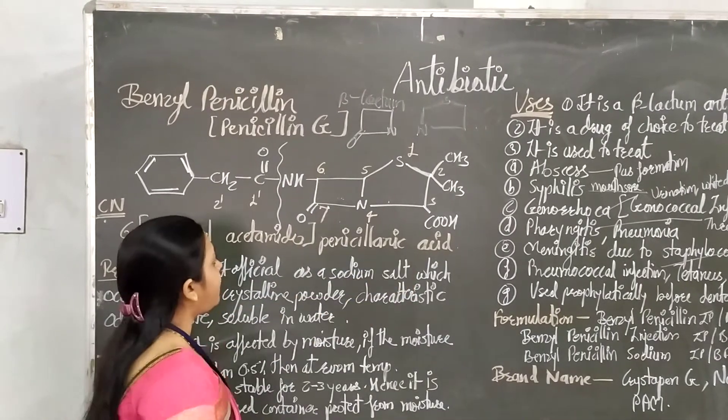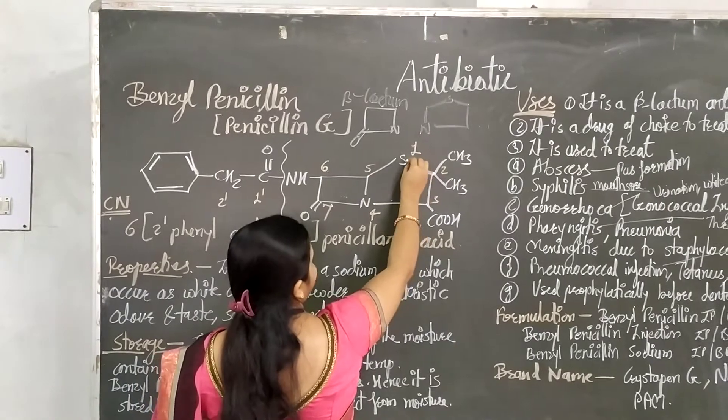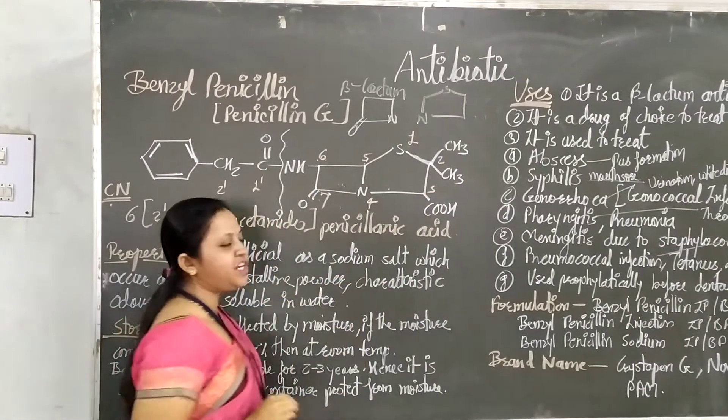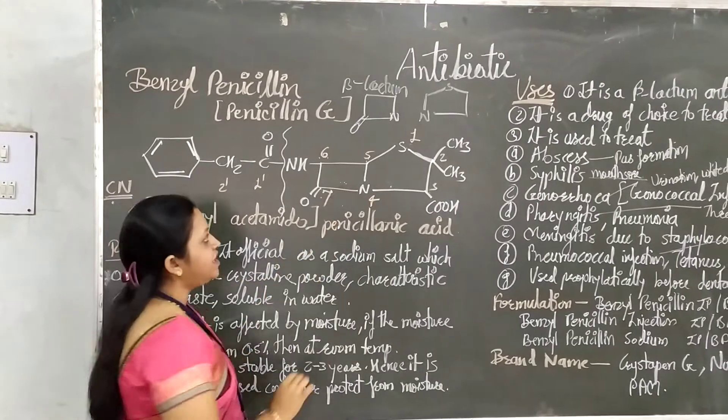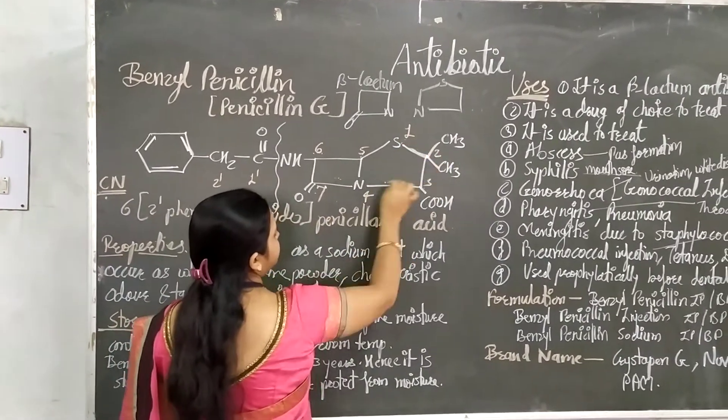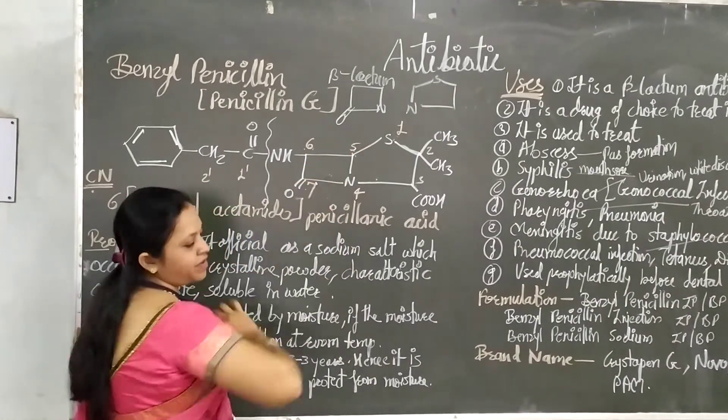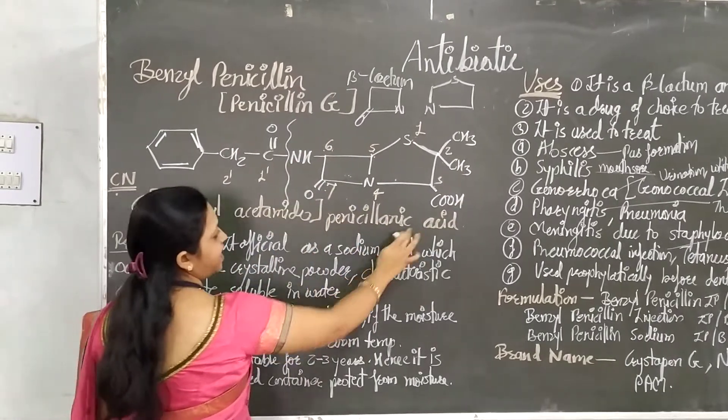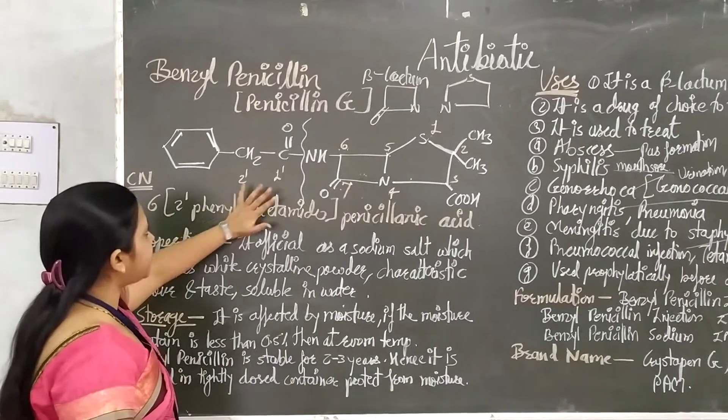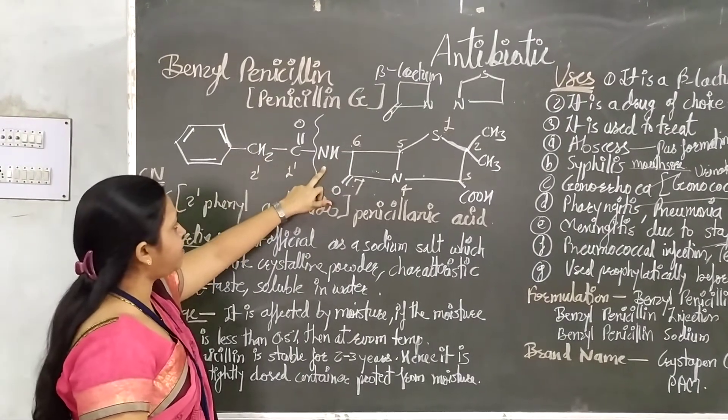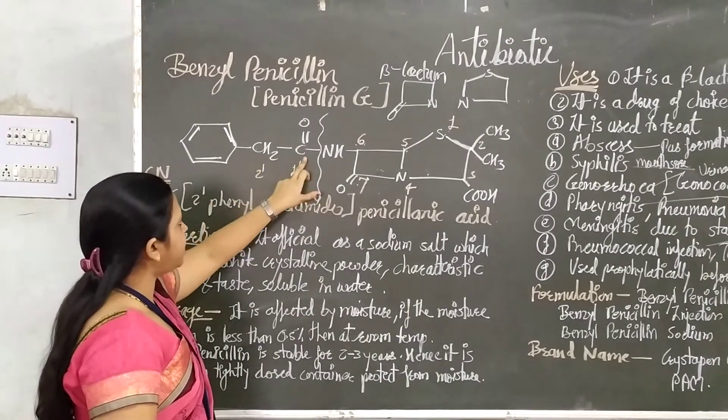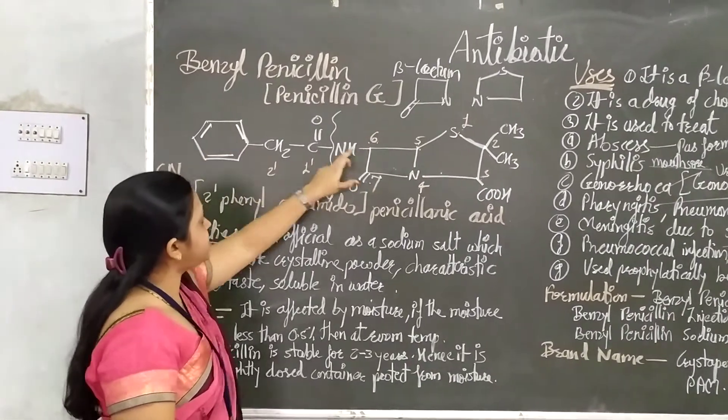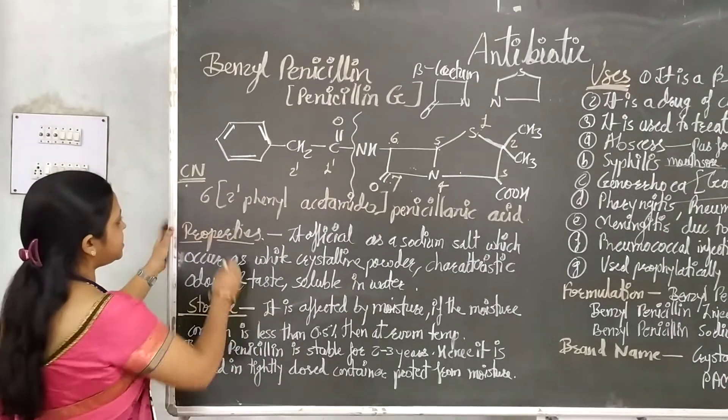The main difference is in the side chain at position 6. Now we have to do the numbering. Here 5, 6, and 7 are the numbering for the parent nucleus. Position 6 is where we attach the side chain for the chemical name.